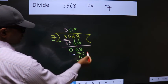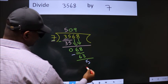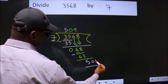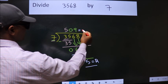No more numbers to bring it down. So we stop here. This is our remainder. This is our quotient.